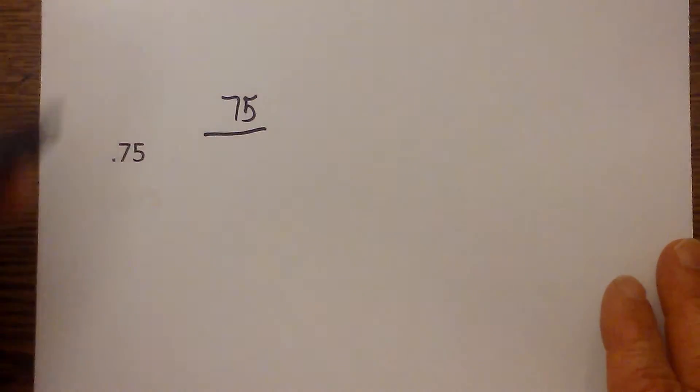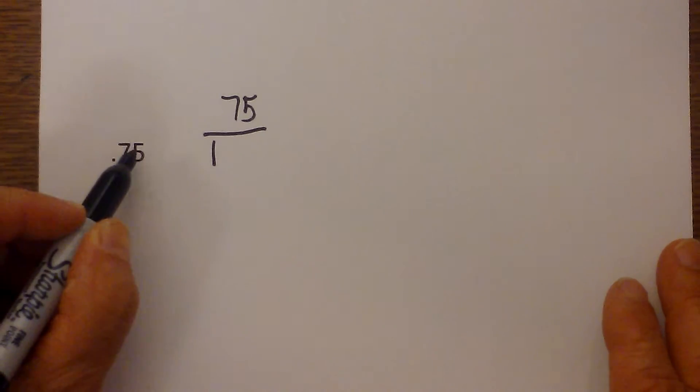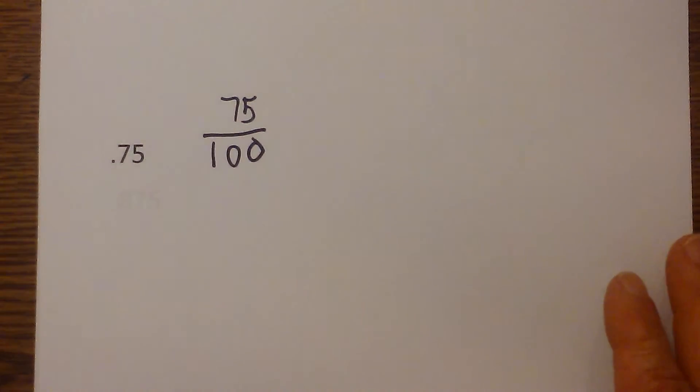First thing I do is we're going to create a fraction and I'm just going to write 75 and just act as if there is no decimal there. I then just write a one, and I count how many numbers are to the right of the decimal. I have one, two, so I just write two zeros.